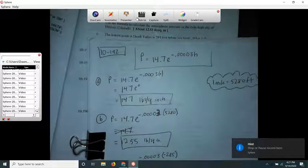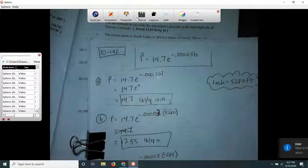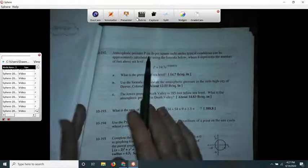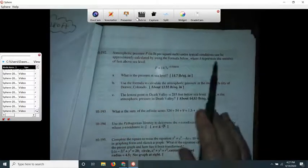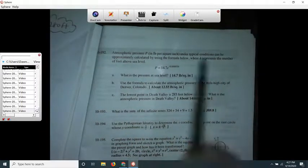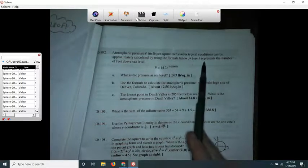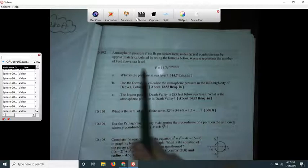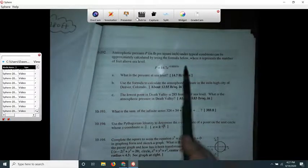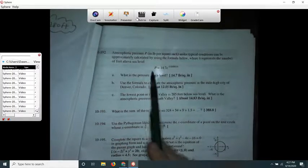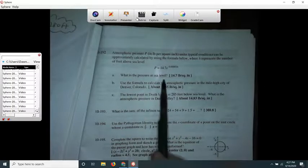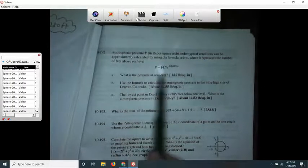Here is integrated problem 10-192. It says atmospheric pressure P in pounds per square inch under typical conditions can be approximately calculated by using the formula below, where H represents the number of feet above sea level. And so here's a little formula for you. What's the pressure at sea level?